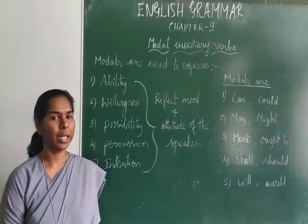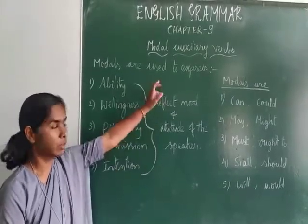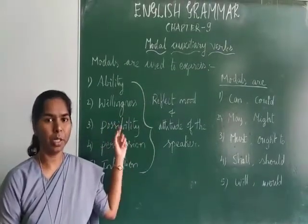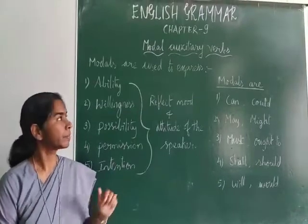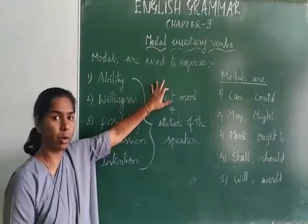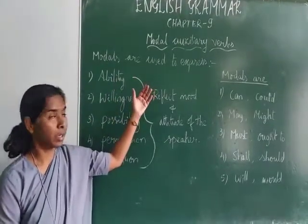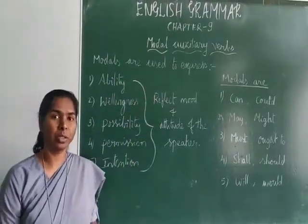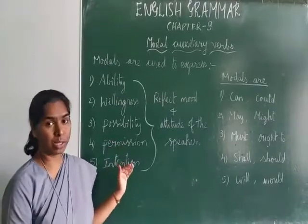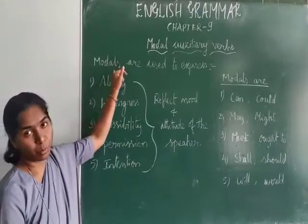Good morning students. Today let us start the 9th lesson of your English grammar — Modal Auxiliary Verbs, or they are also called as Modals. In the 8th chapter you learned Primary Auxiliary Verbs, and in the 9th chapter let us learn Modal Auxiliary Verbs, or called as Modals. Modal Auxiliary Verbs are called as Modals and they are used as auxiliary verbs used along with the main verb.